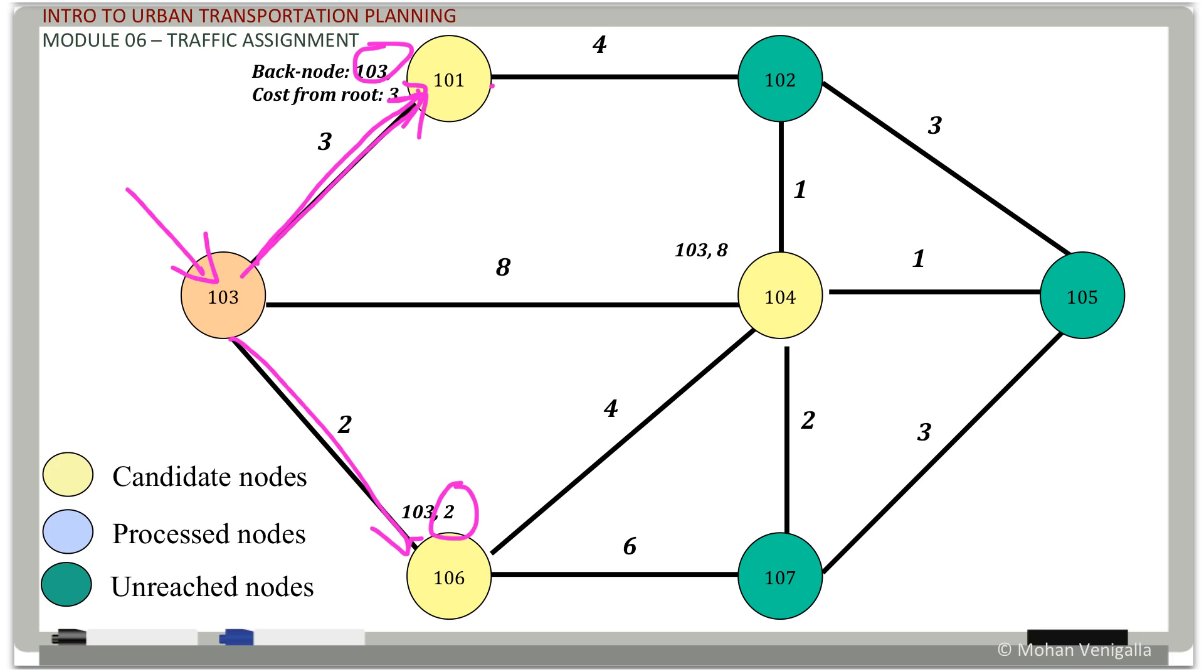Two minutes to get to 106 and three minutes to get to 101. And what we're going to do is label where you came from. To 101 you came from 103, so you're going to put the back node, your previous node, predecessor node, whatever you want to call it. Let's call it back node. The back node is 103, and the cost from root. Remember, we are not talking about cost from previous node, we are talking cost from root. So you have to keep on adding as you go forward. So this is three, this is two, and this guy you can reach in eight minutes, 104.